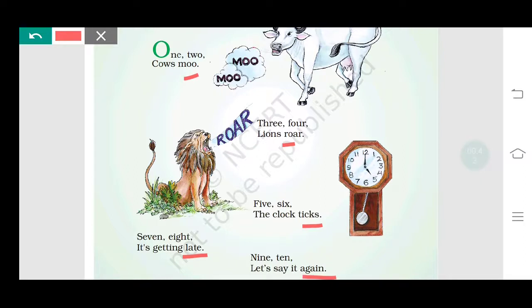This is easy reading and it will be very easy for you to learn. One two, cows moo. Three four, lions roar. Five six, the clock ticks. Seven eight, it's getting late. Nine ten, let's say it again.